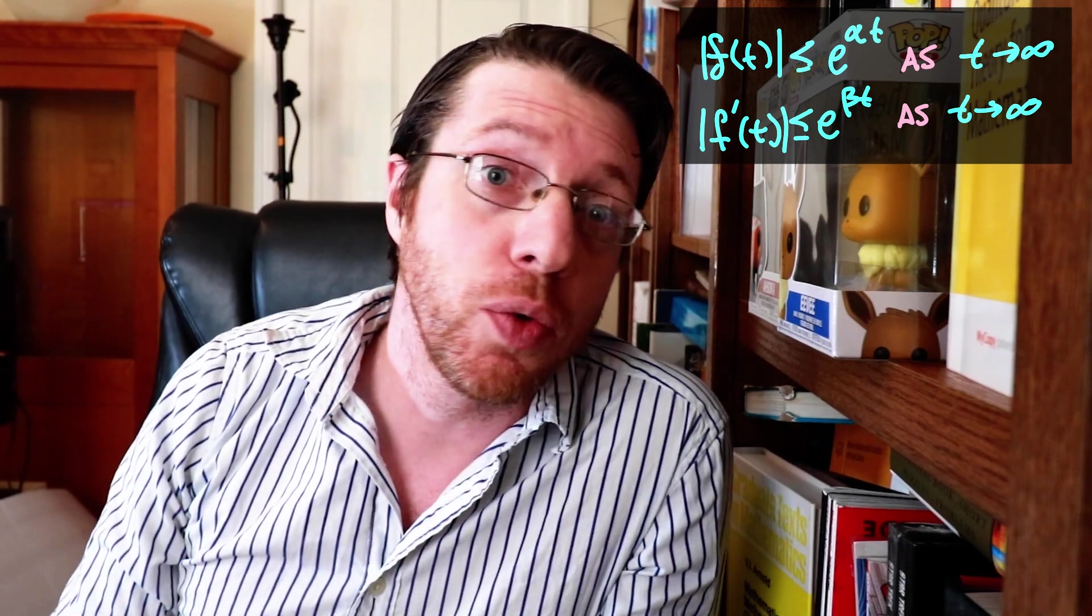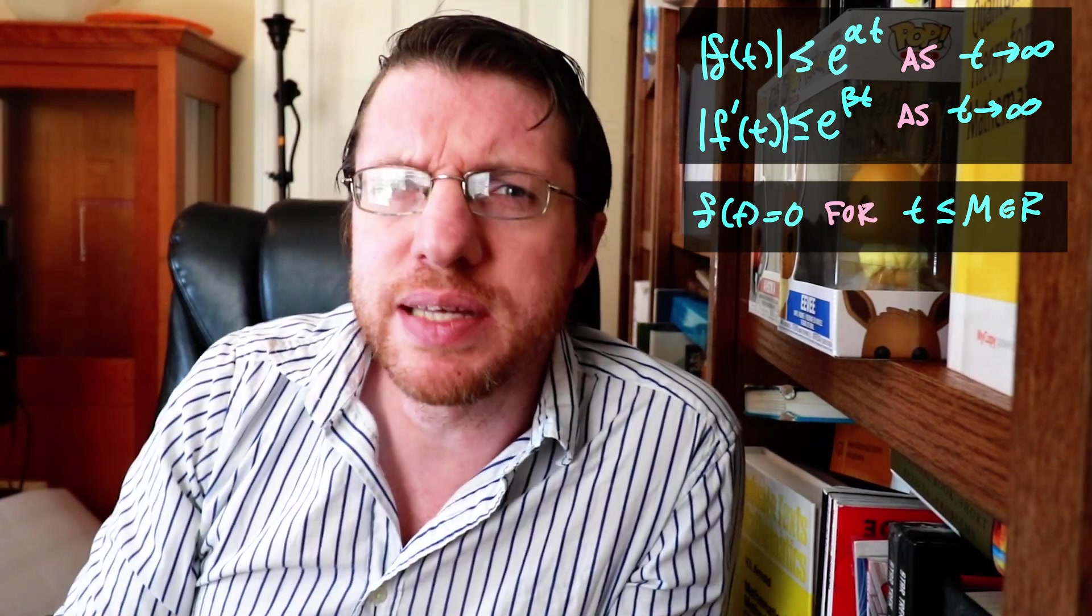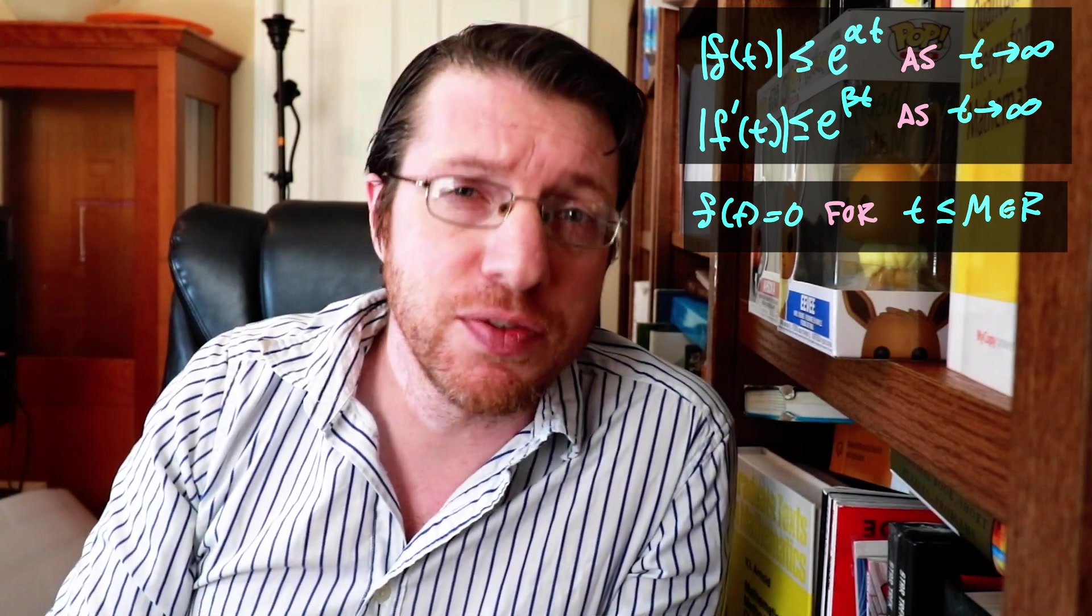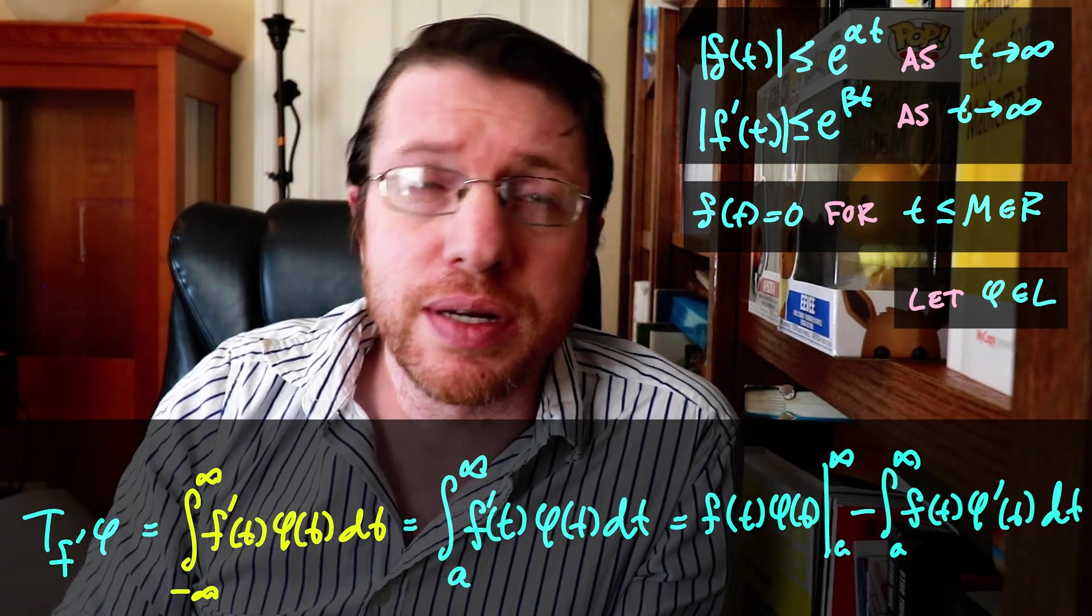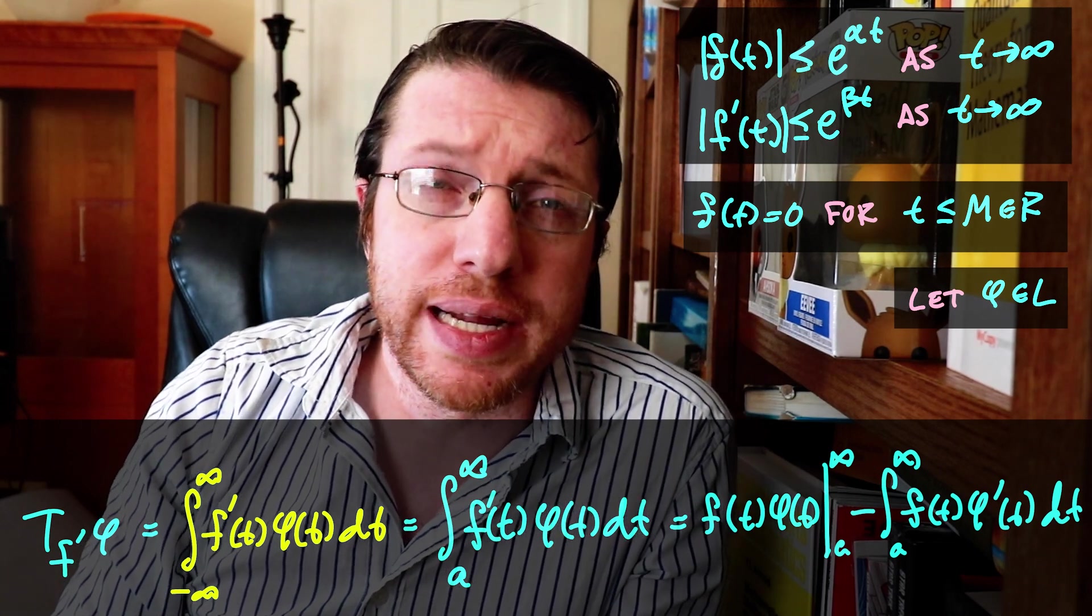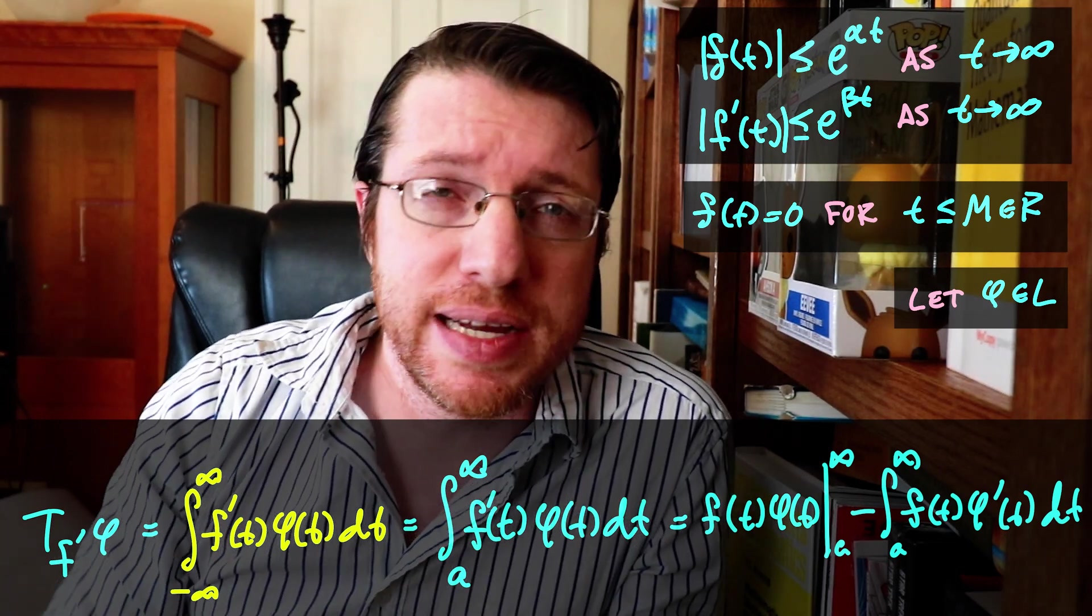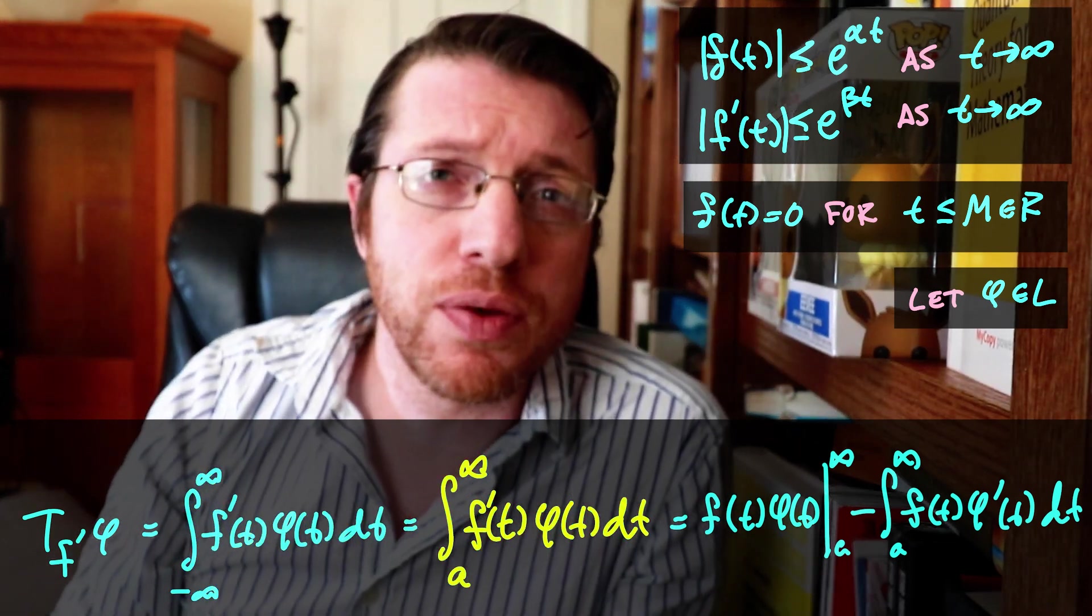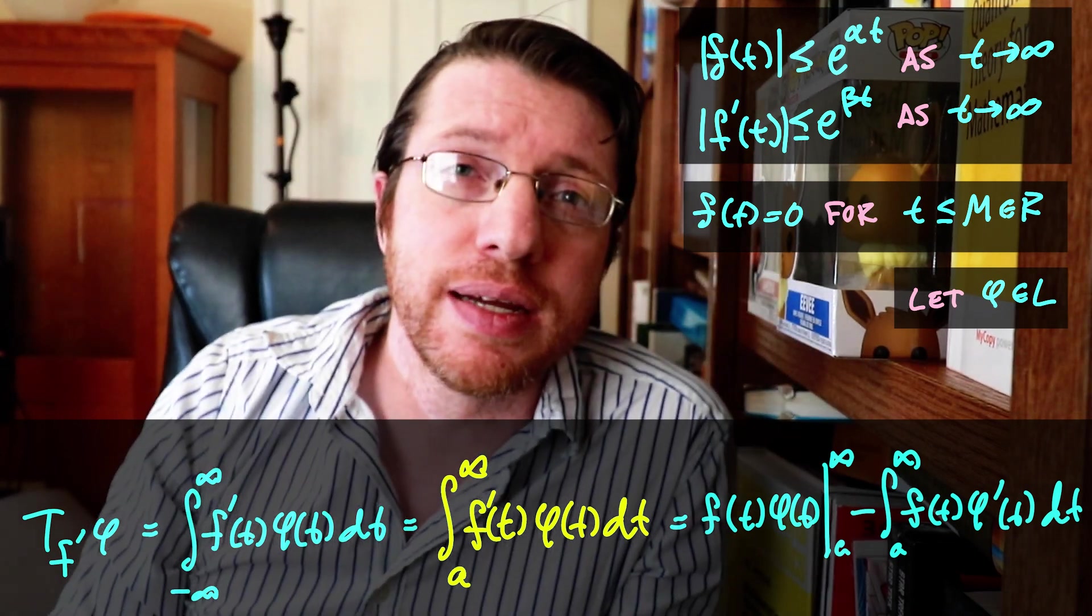Suppose f is a differentiable function of exponential type with support in m to infinity. Moreover, suppose that the derivative is also of exponential type. Then, if we look at the regular functional defined by the derivative of this function and act on a function from our space L, then we get the integral equation of the integral from negative infinity to infinity of f prime of t times phi of t dt. Since f has support in m to infinity, so does f prime. Hence, for some a less than m, we can write the integral as the integral from a to infinity of f prime of t times phi of t dt.